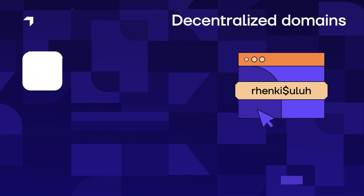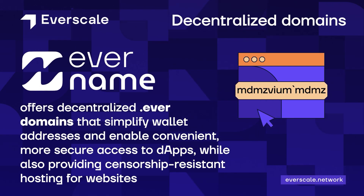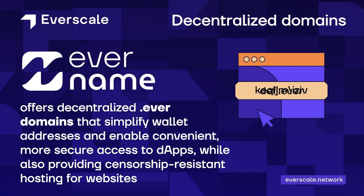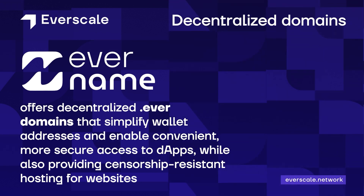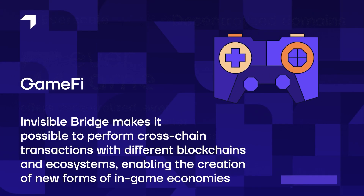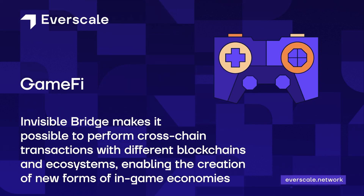Evername offers decentralized .ever domains that simplify wallet addresses and enable convenient, more secure access to dApps, while also providing censorship-resistant hosting for websites. Invisible Bridge makes it possible to perform cross-chain transactions with different blockchains and ecosystems, enabling the creation of new forms of in-game economies.